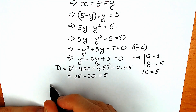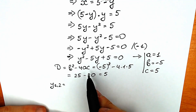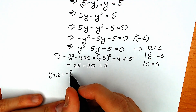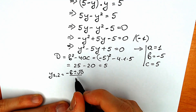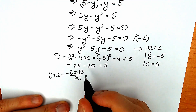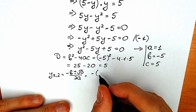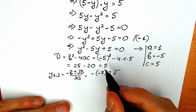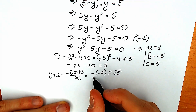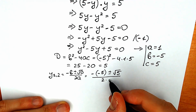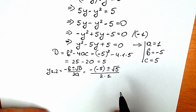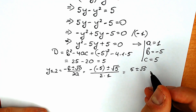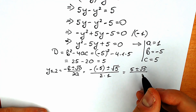So now let's find y₁ and y₂. Using the quadratic formula: y equals minus b plus or minus the square root of D, all over 2a. Plugging in: minus b equals minus(minus 5) equals 5, so we have 5 plus or minus the square root of 5, all over 2 times 1, which is 2.